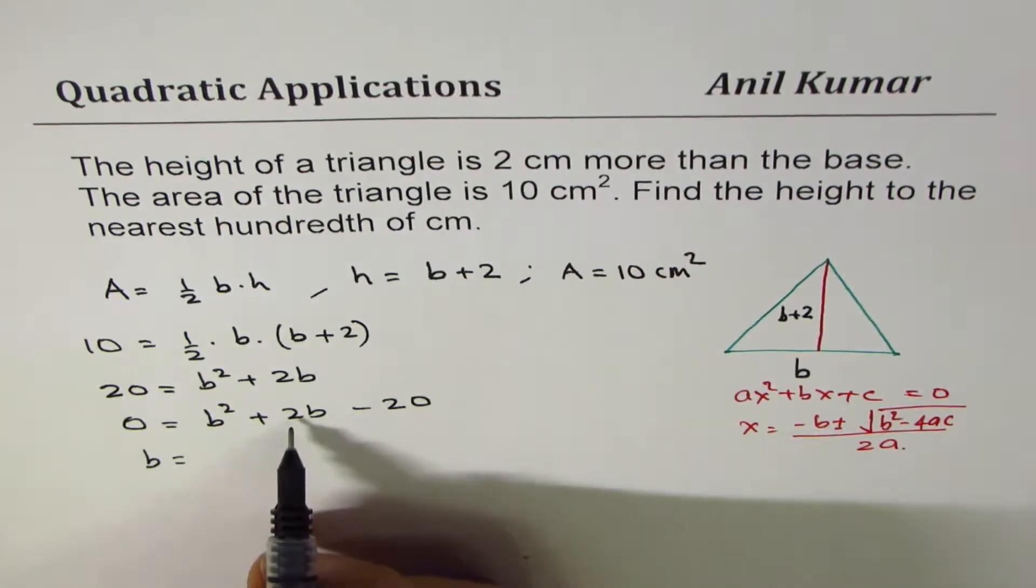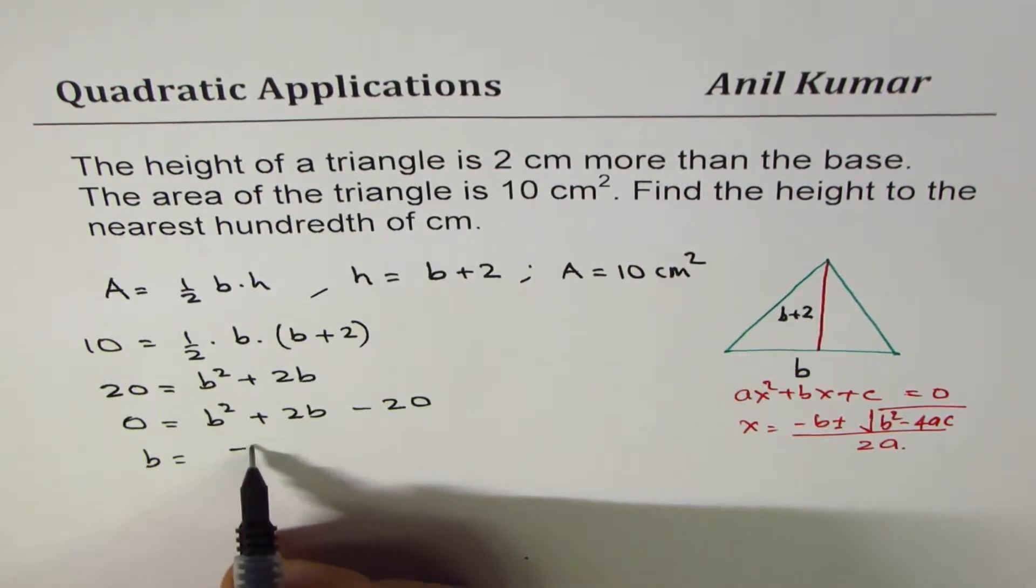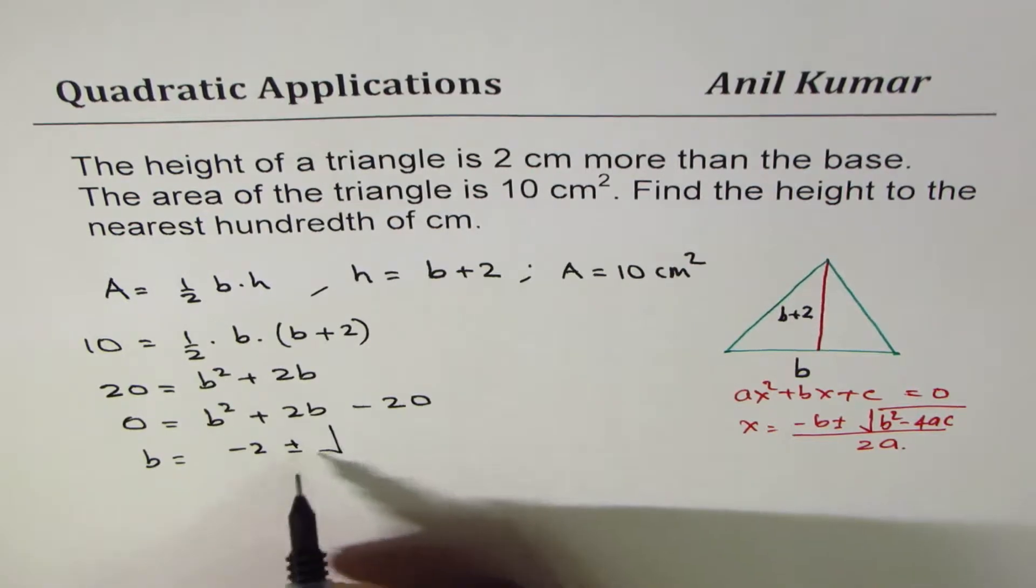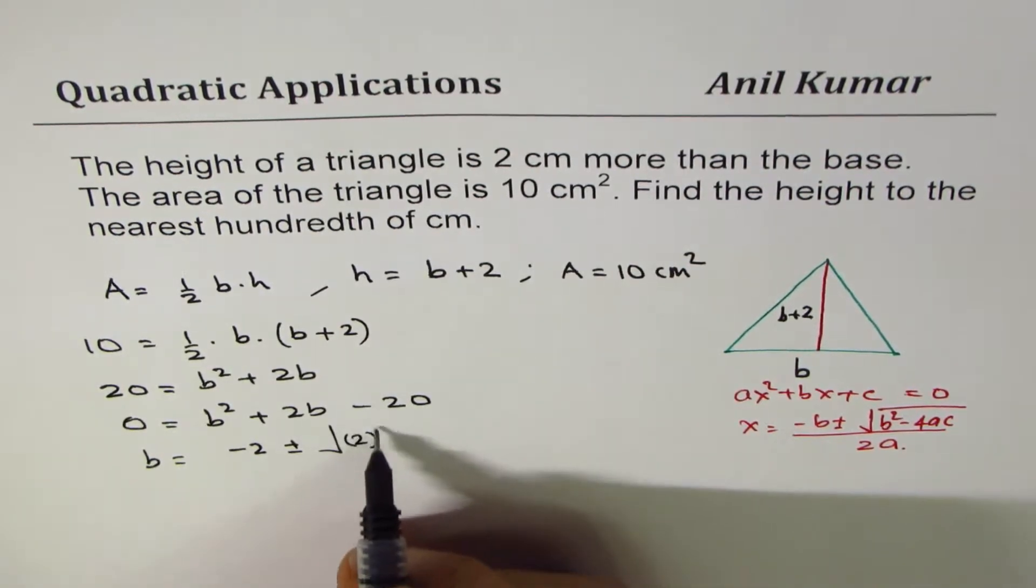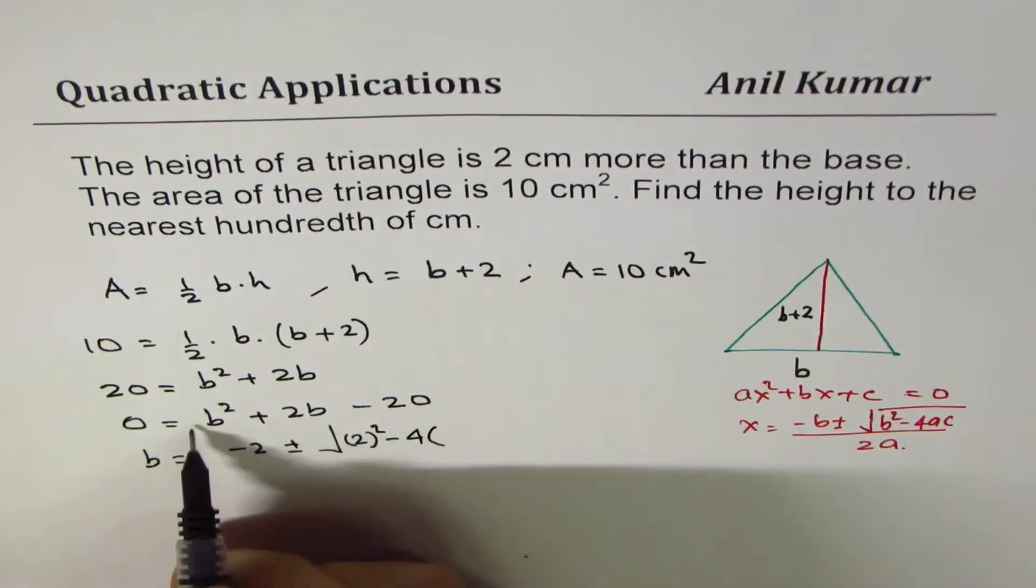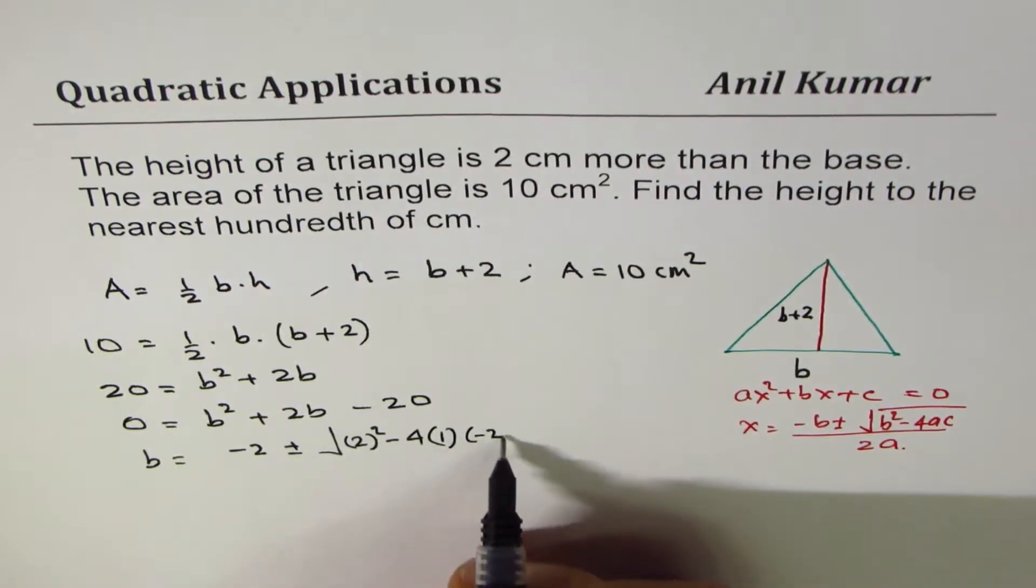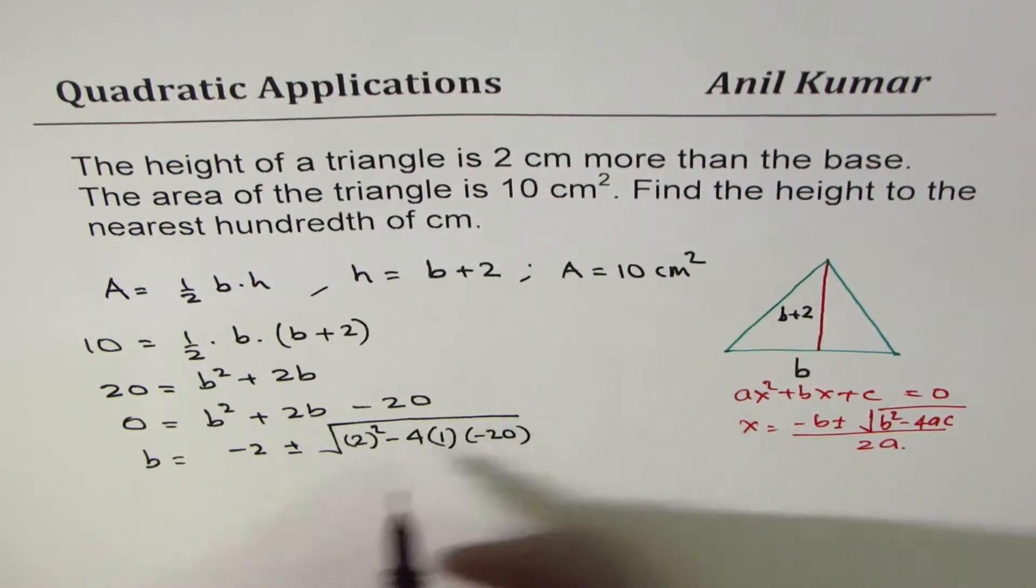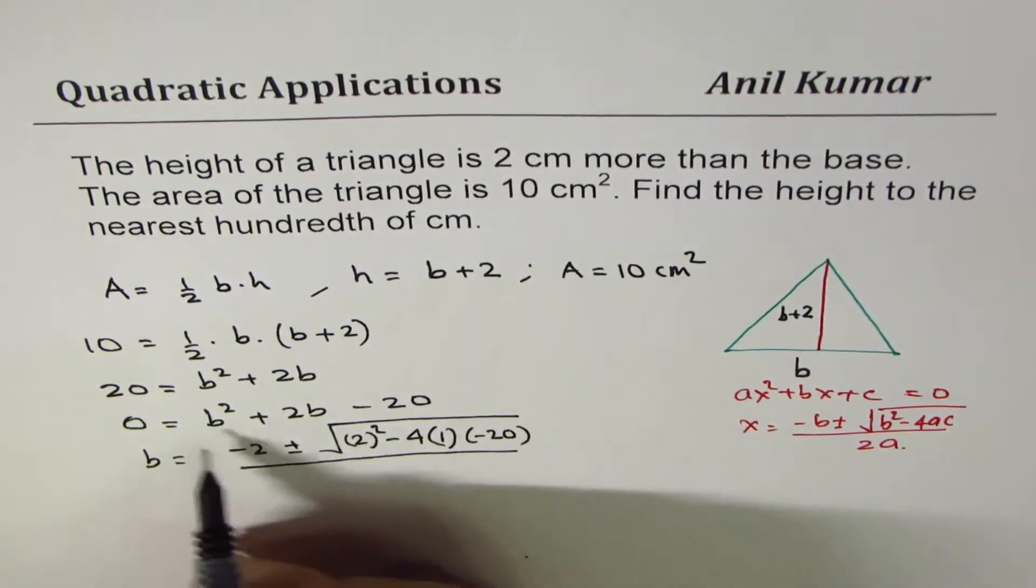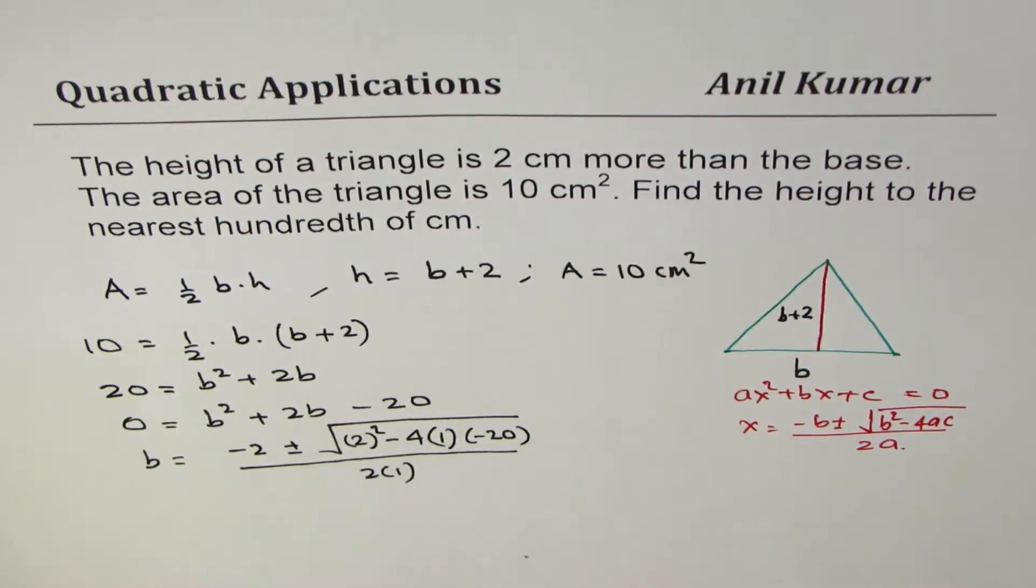So here minus b means minus 2. So minus 2 plus minus square of b square which is 2 square minus 4 times a is 1 and c is minus 20, divided by 2 times a which is 1.